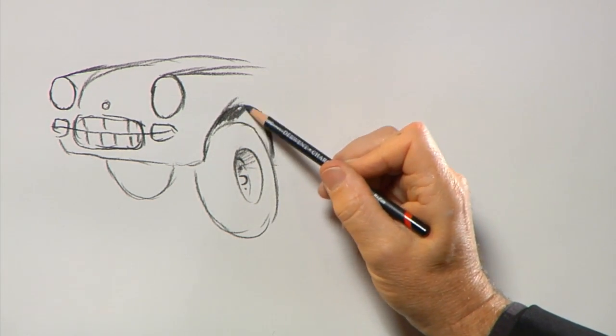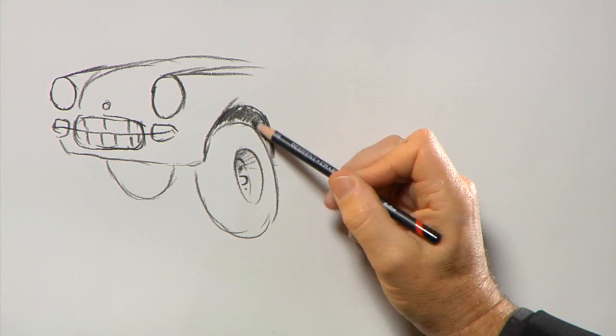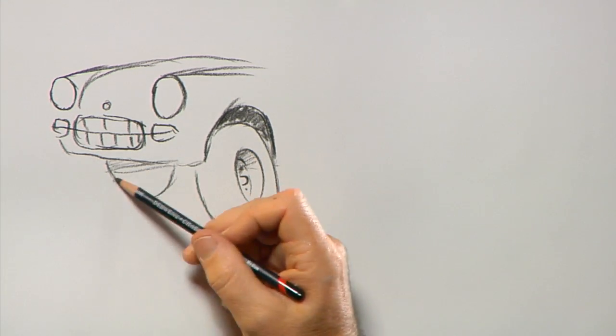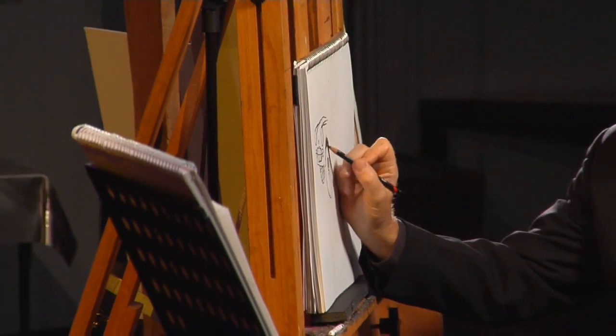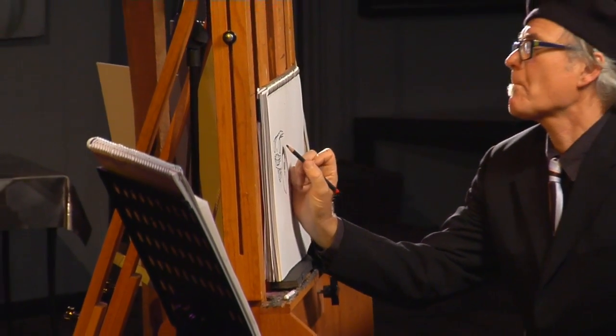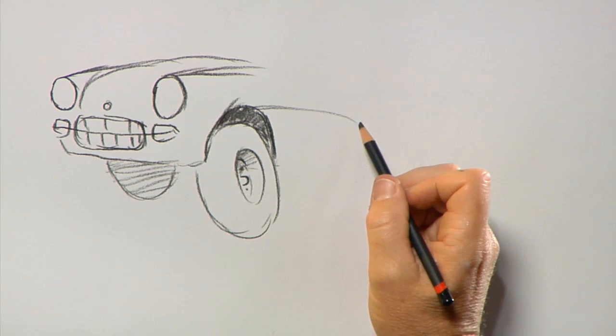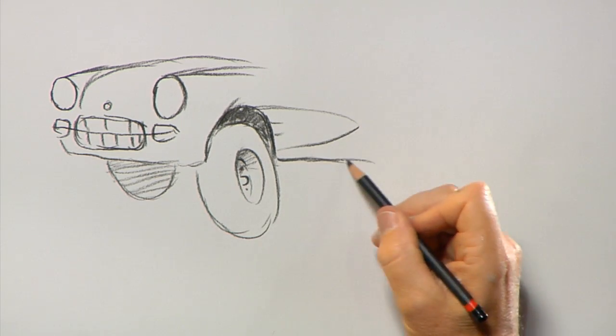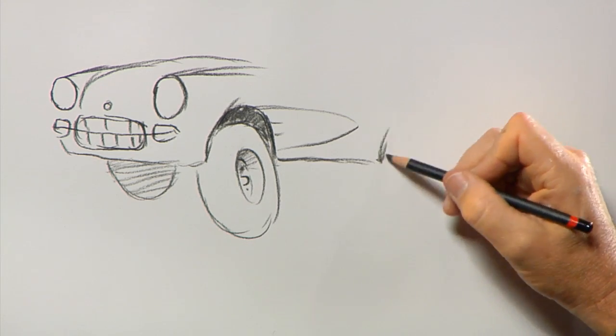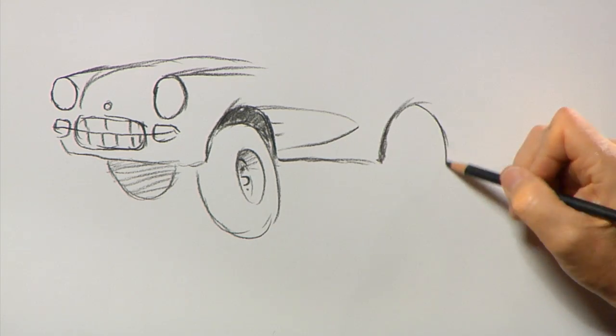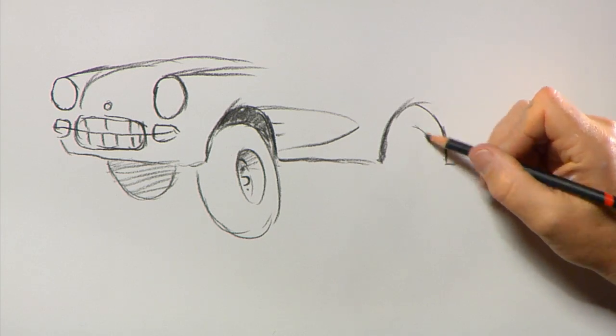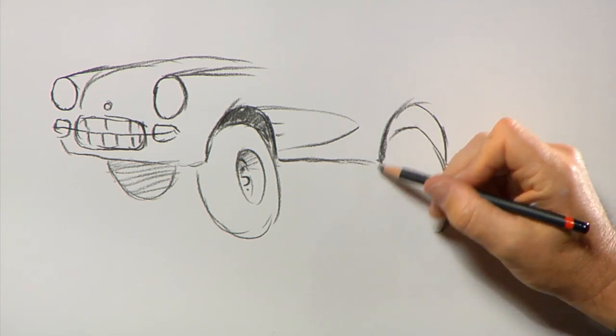And it's always dark under the wheel well, so put a shadow in there. Make the wheel in the background gray, but don't go completely black, because it'll make it look further away if it's not. Some kind of design on the side of the car. Then when I draw the back wheel, I like to make it go down a little lower than the front wheel, almost like it's a horse rearing up.